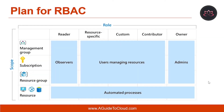What can you do with RBAC? RBAC allows one user to manage a virtual machine in a subscription and another user to manage a virtual network. Using RBAC, you can segregate duties within your team and grant only the amount of access to the user that they need to perform their jobs. Instead of giving everybody unrestricted permission to your Azure subscription or resources, you can allow only certain actions at a particular scope. When planning your access control strategy, it is a best practice to grant users the least privilege to get their work done.